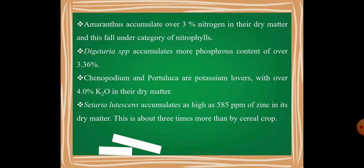Amaranthus can also accumulate over 3.36% phosphorus content. In case of Chenopodium and Portulaca, they accumulate potassium — up to 4% K₂O in their dry matter. Additionally, Setaria lutescens accumulates as high as 585 ppm of zinc in its dry matter, which is about 3 times more than cereal crops. This question about zinc accumulation has also been asked in PhD exams.